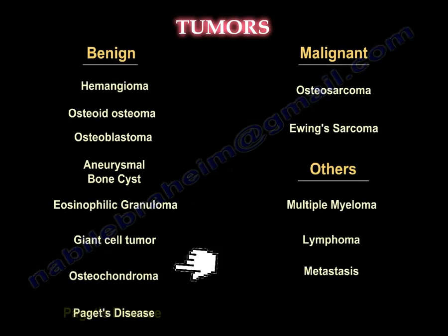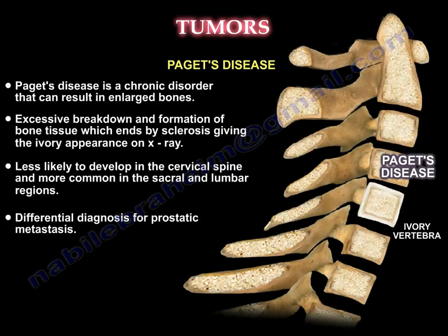Paget disease is a chronic disorder that can result in enlarged bones, with excessive breakdown and formation of bone tissue which ends in sclerosis, giving an ivory appearance on X-ray. You find an ivory vertebra, which is less likely to develop in the cervical spine and more common in the sacral and lumbar region. The differential diagnosis is prostatic metastasis.